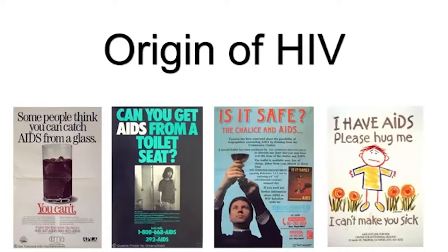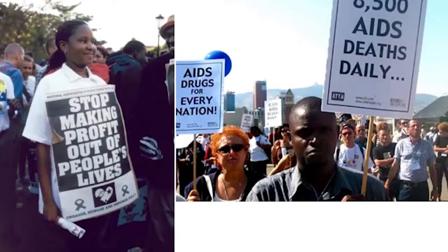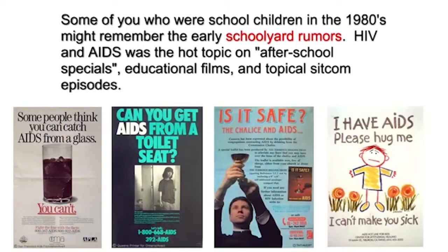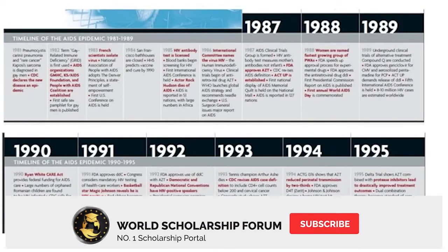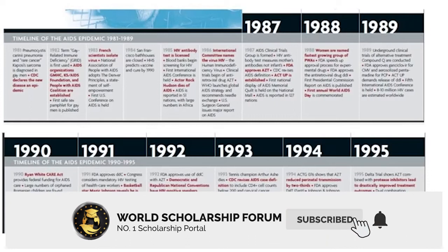Where does HIV come from? For some of us who remember the sudden emergence of HIV into the popular culture and awareness of the U.S. in the early 1980s, HIV appears to have come from nowhere. Rumors swirled about where it came from, how it came to infect people from all walks of life around the world. It's only now, after over 25 years of research and discovery, that we can finally start to say with some confidence where HIV came from.